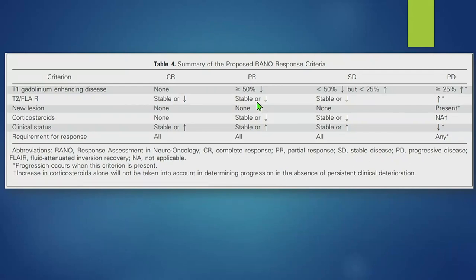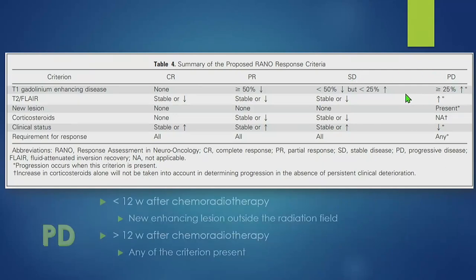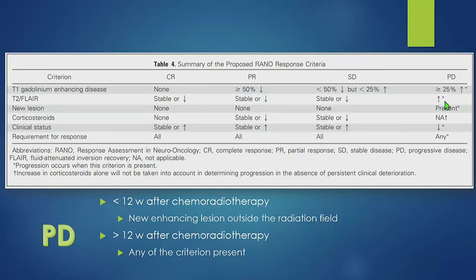The RANO criteria define complete response, partial response, stable disease, and progressive disease. Important to note: to label a patient with complete response or stable disease, they must fulfill all criteria. But when talking about progressive disease, two weeks after the end of chemoradiotherapy, fulfilling any single criterion is sufficient to say this is progressive disease. During the first two weeks after chemoradiotherapy, only a new enhancing lesion outside the radiation field defines progressive disease.